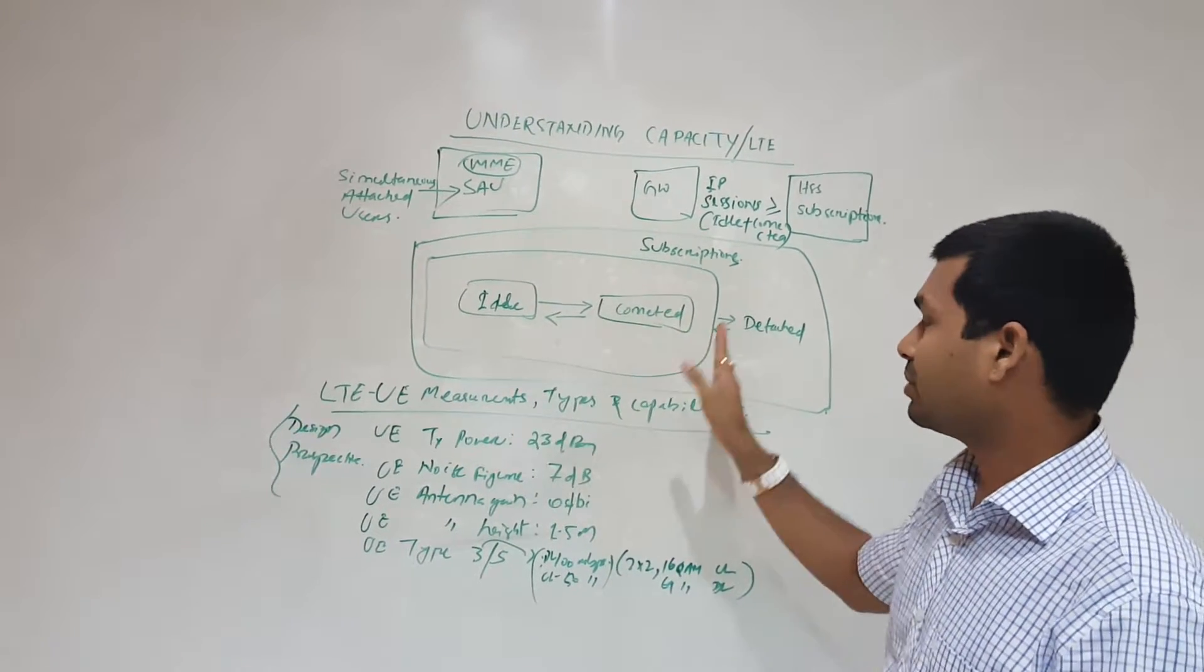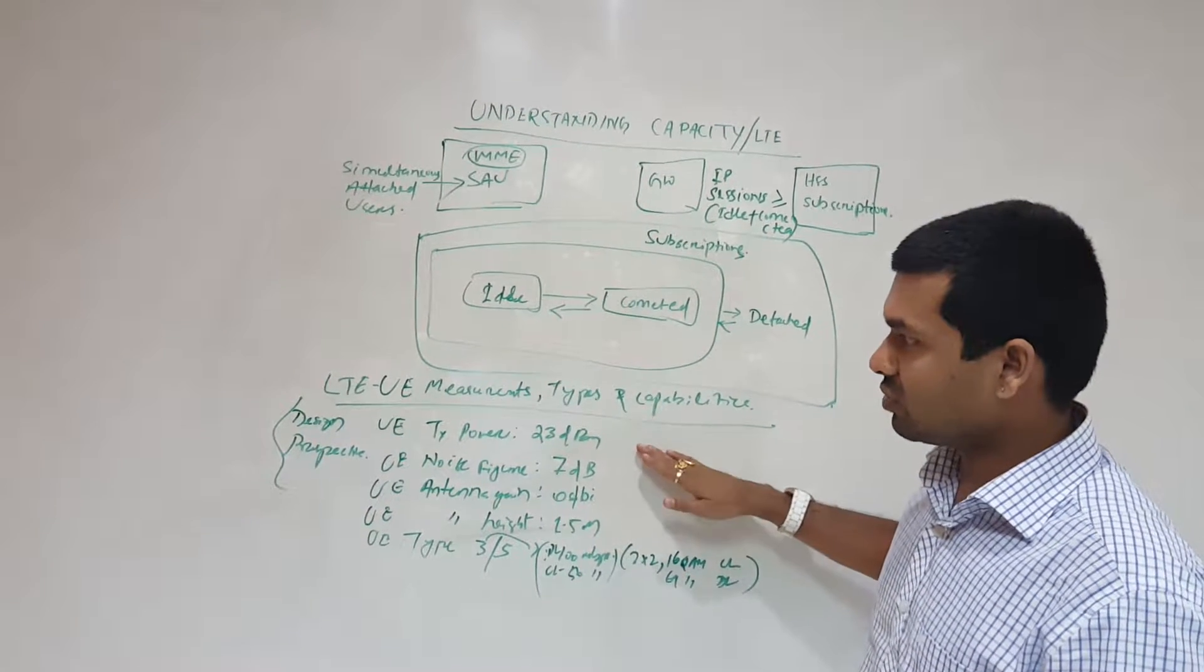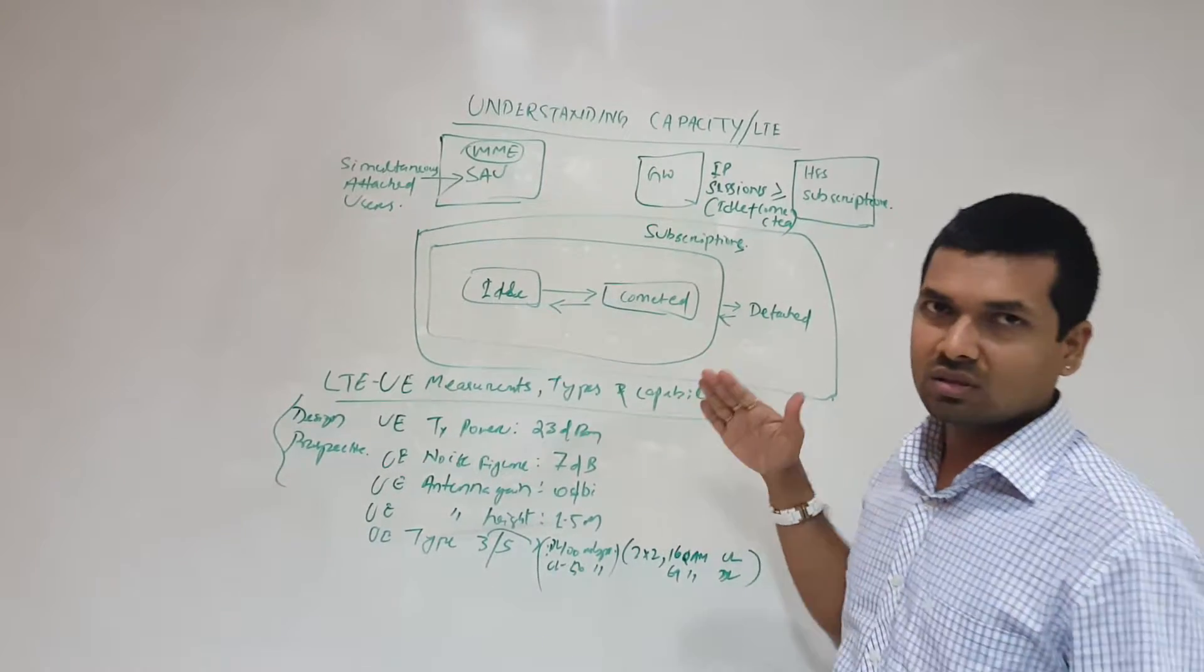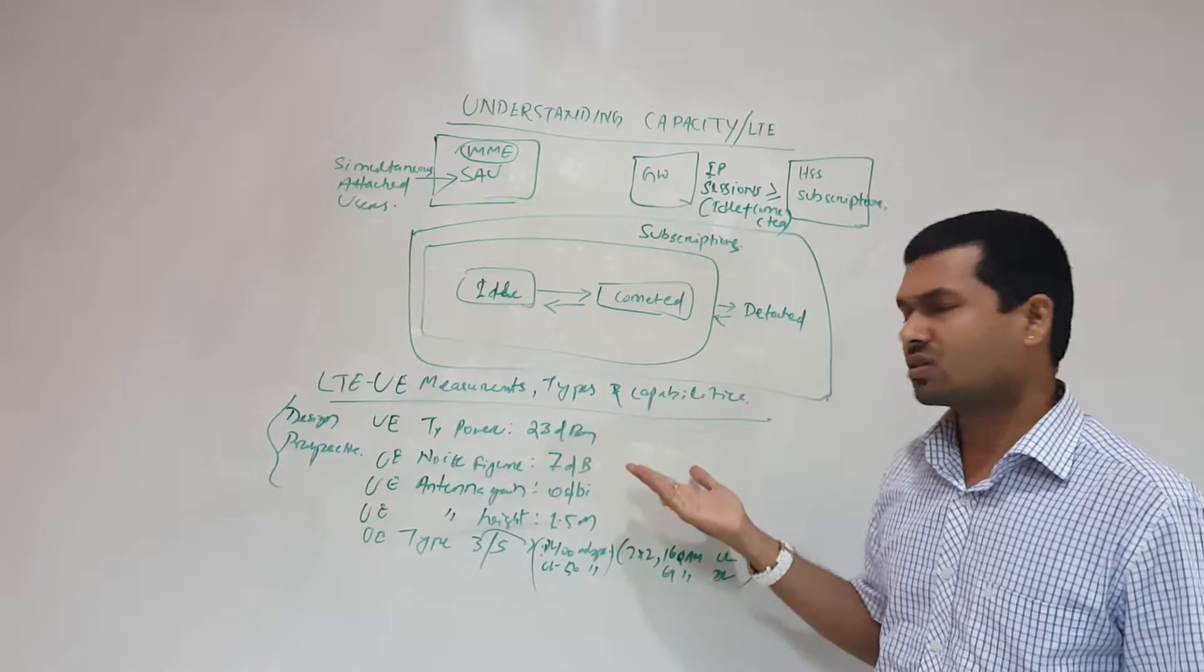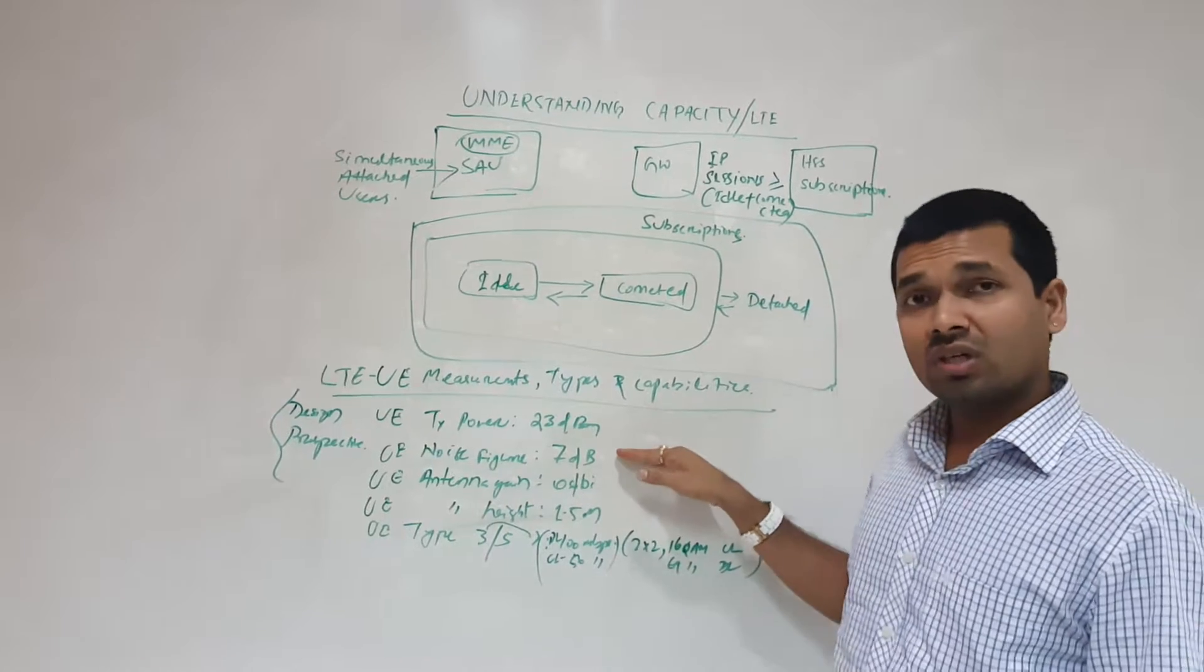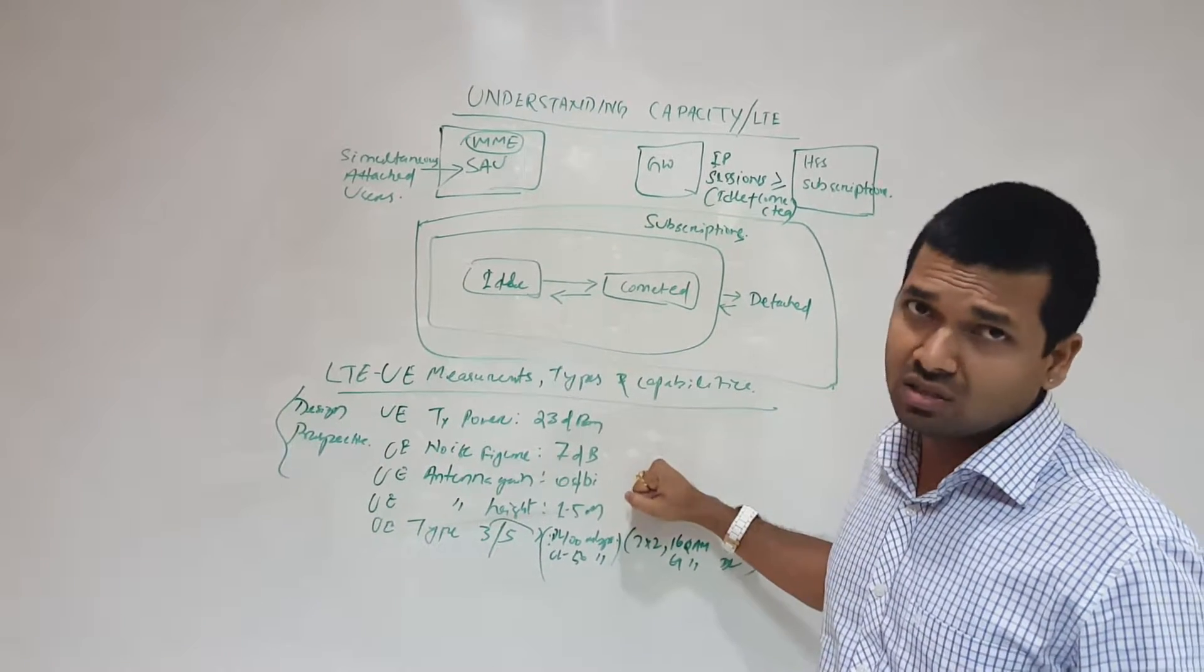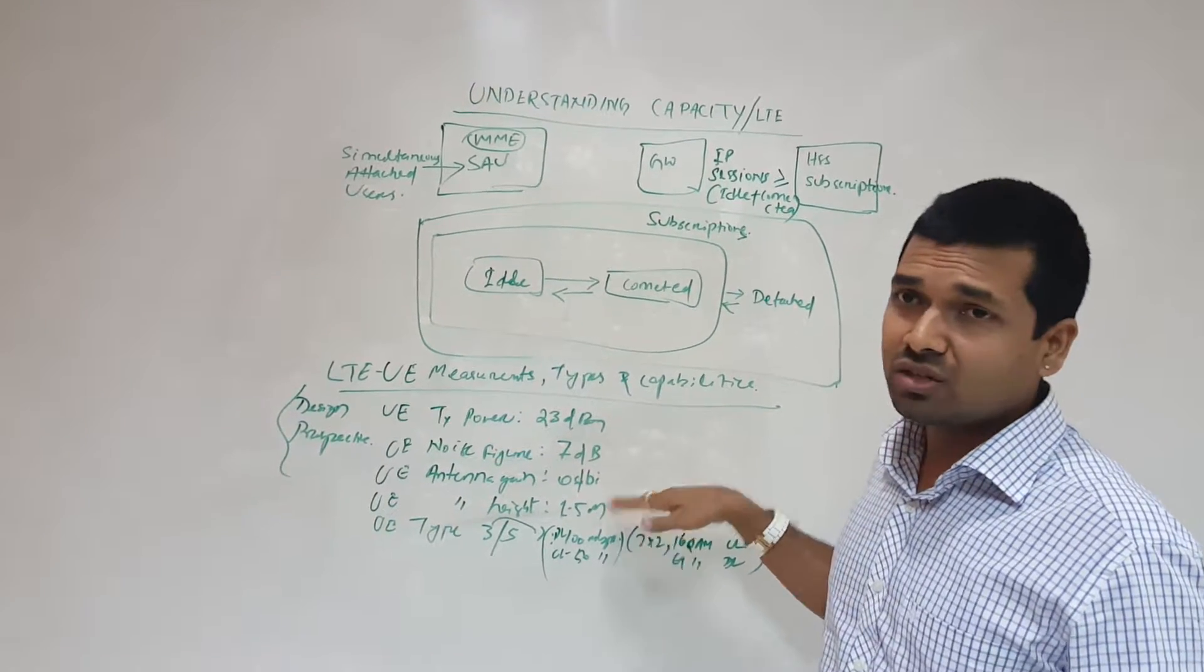The second point is the design perspective in terms of UE. The UE TX power is 23 dBm. These are the parameters for UE when considering planning or link budgeting. UE noise figure is considered 7 dB in LTE. UE antenna gain is 0 dBi, and UE height normally we keep 1.5 meters, the average height of a man.